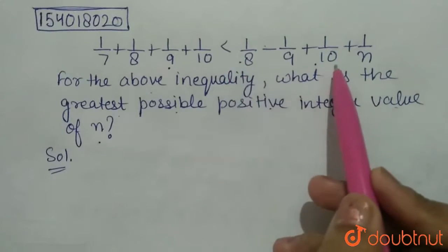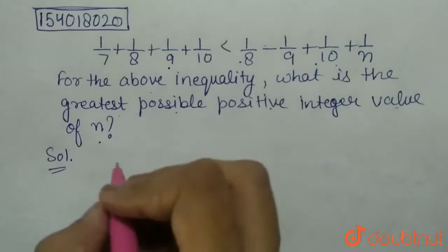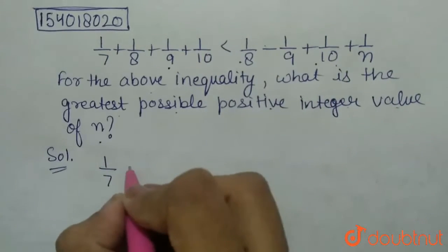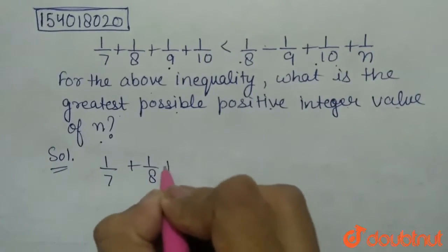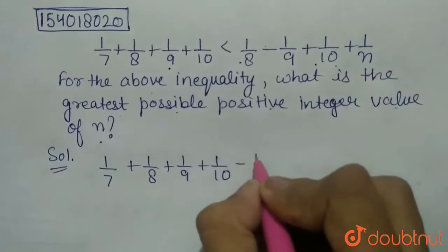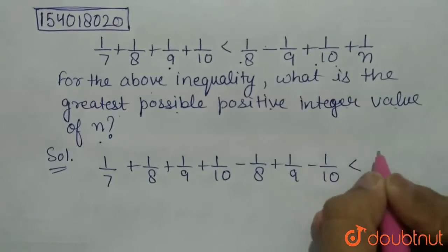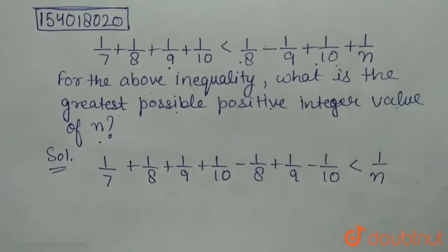First we will shift all the rationals which are present on the right side of this inequality to the left side. And we will get 1/7 + 1/8 + 1/9 + 1/10 - 1/8 + 1/9 - 1/10 < 1/n.